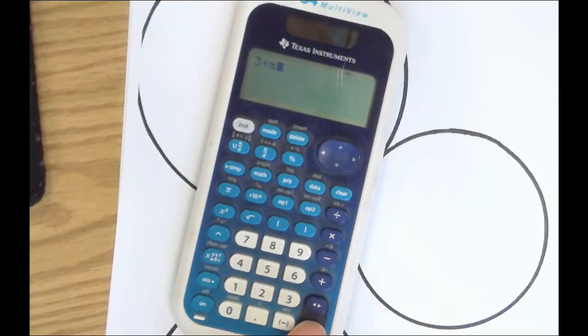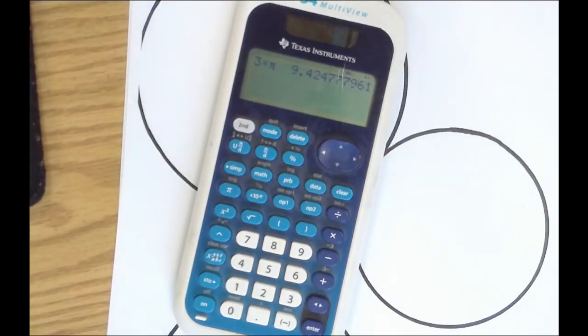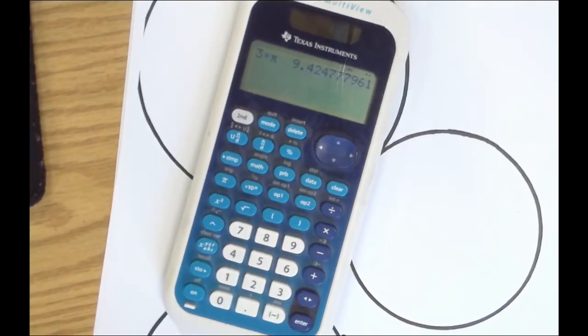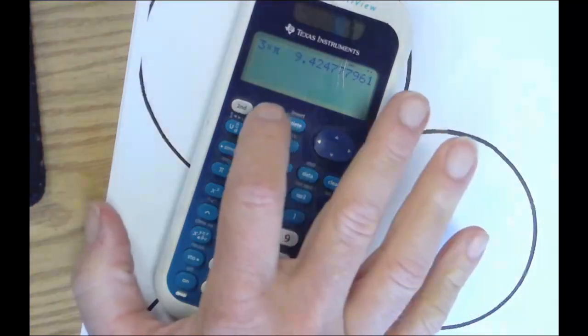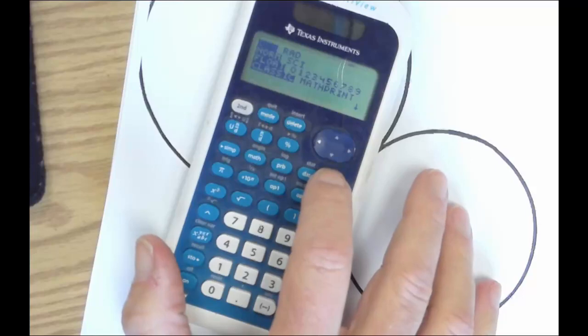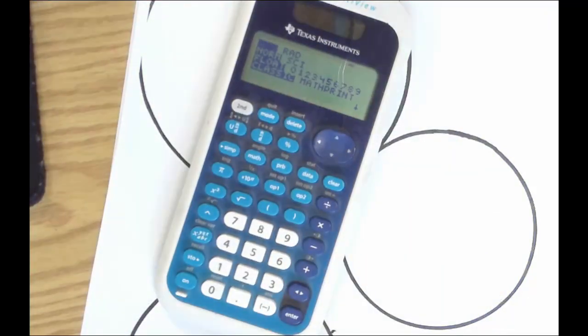Now watch what happens: three times pi, enter, and there's the decimal I was hoping for. It's not pretty but there it is. So there's the problem solved.